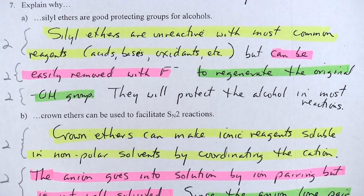So here we're looking at the other segments of Section 7 which we did not do before. So if you want to refer back to what those segments asked you to do, we'll look at the other three here one at a time with a kind of a key from the professor that also assigned points. So the first part, Segment A, is explain why silyl ethers are good protecting groups for alcohols. If you can read the answer there, silyl ethers are unreactive with most common reagents, acids, bases, oxidants, etc., but can be easily removed with negatively charged fluoride ion to regenerate the original hydroxyl group that will protect the alcohol in most reactions.